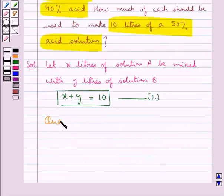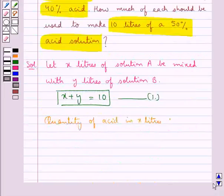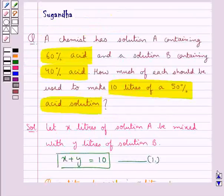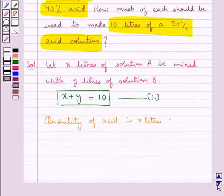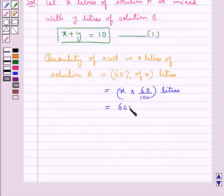Next, let's find out the quantity of acid in x litres of solution A. This would be equal to 60% of x litres, since solution A contains 60% acid. So this is equal to 60x upon 100 litres. The quantity of acid in x litres of solution A is 60x upon 100 litres.